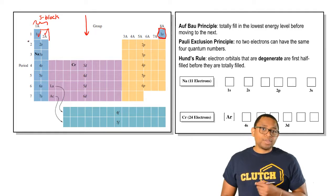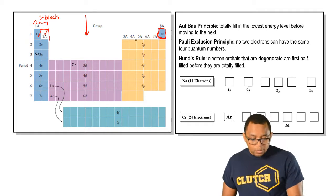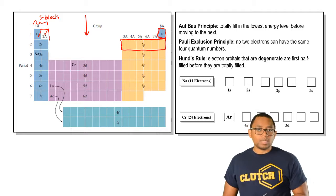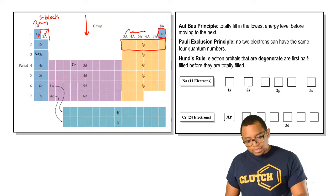With P, we have three orbitals, so that means we have a potential of up to six electrons that P can hold, so that's why this is the P block.